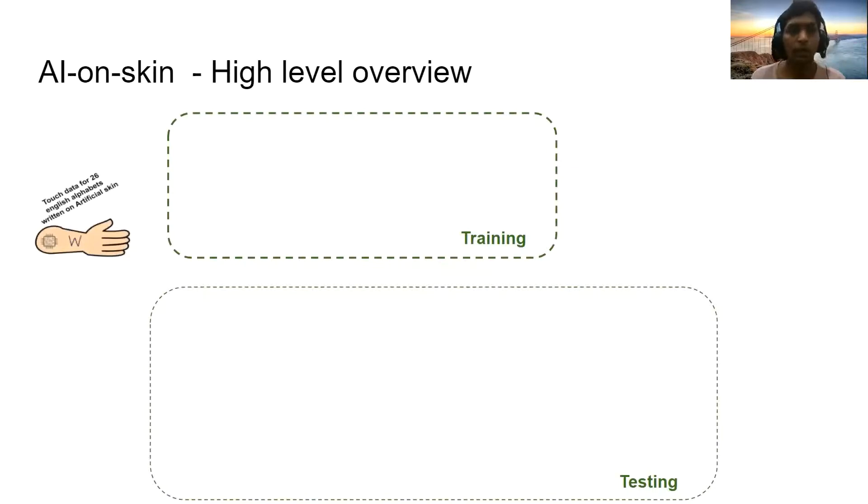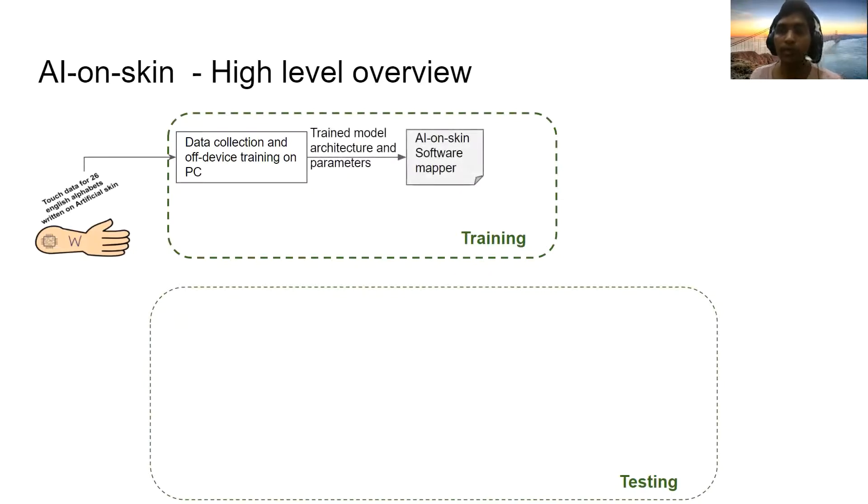During the training phase, the touch data for all the 26 English alphabets written on the artificial skin patch is collected using a PC and the data is being used by libraries like TensorFlow or PyTorch to implement a neural network model and the trained neural network model and the parameters will be sent to our AI on skin software mapper which will be running on the same PC. This software mapper will generate configuration signals to program the AI on skin accelerator that will be attached to the artificial skin patch.